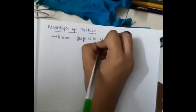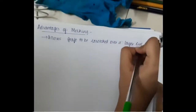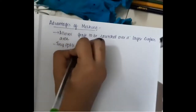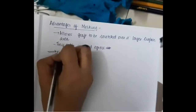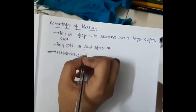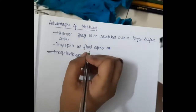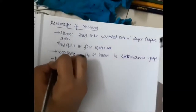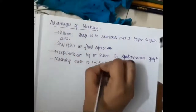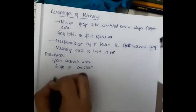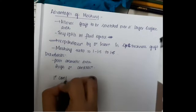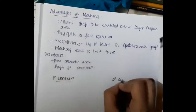Now let us learn about the advantages of meshing. The mesh allows the graft to be stretched over a larger surface area, so even a small skin piece may be sufficient for a larger area. Tiny splits let fluid egress, preventing formation of seroma. Re-epithelialization by secondary intention is done in split thickness grafting. The meshing ratio is 1 to 1.5 to 1.6. Drawbacks of meshing include poor cosmetic appearance leading to hyperpigmentation and secondary contraction.